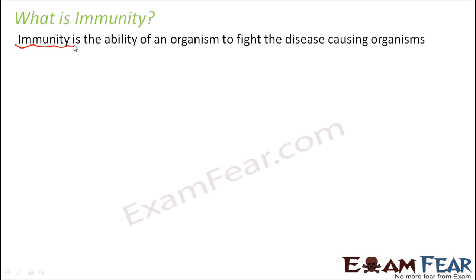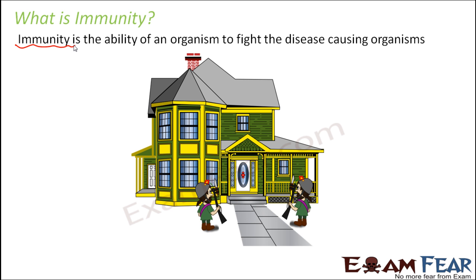When we talk about immunity, think of it this way. Suppose you have a big house with all your valuables inside and you want to protect them. You protect them by keeping security guards outside. The house is our body, and we want to protect it from any disease-causing organisms. The immune system, made up of several organs, acts as the security guards.